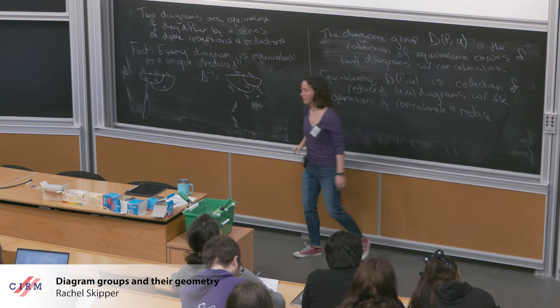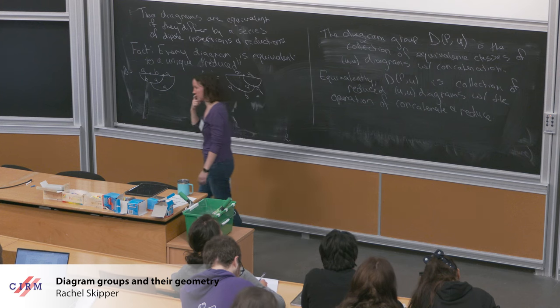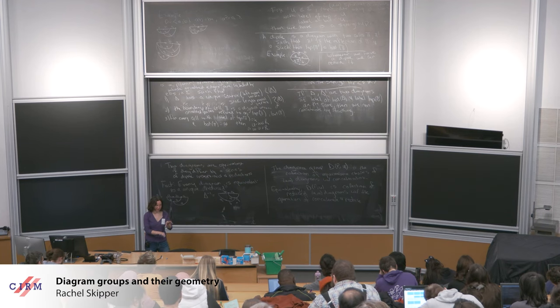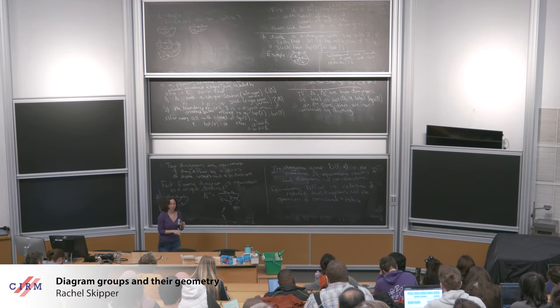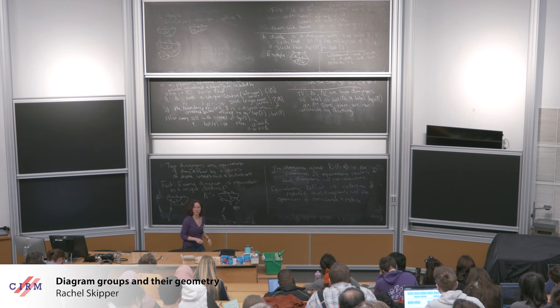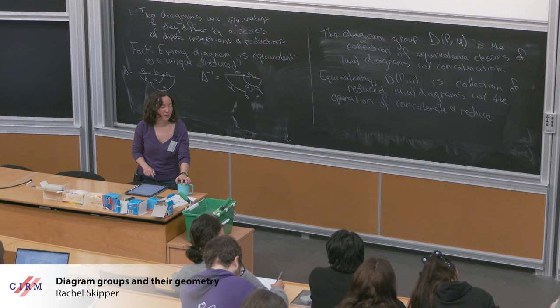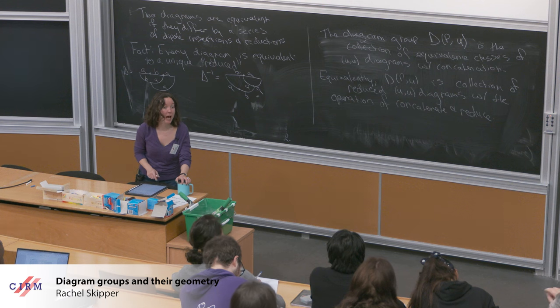If I want to think about elements as just the reduced diagrams, then when I do the concatenation, I might introduce some dipoles that I then have to reduce. It's not obvious immediately that the reduction is unique — it uses Newman's diamond lemma, local confluence.